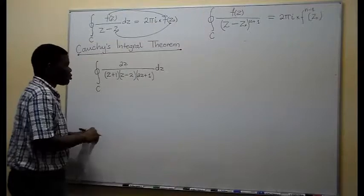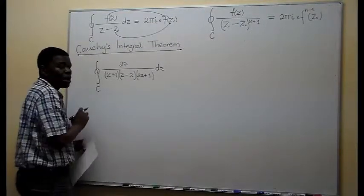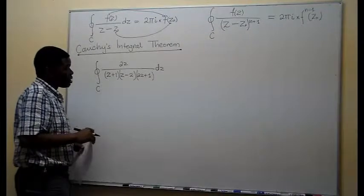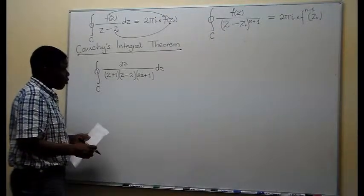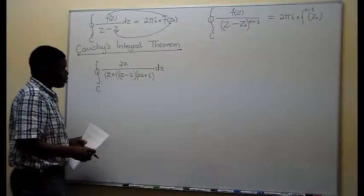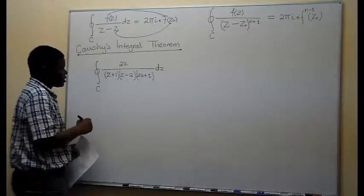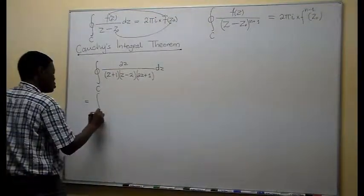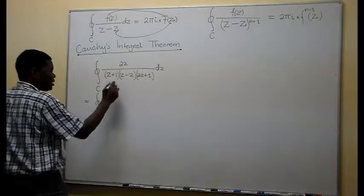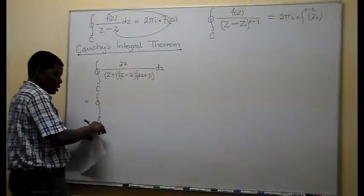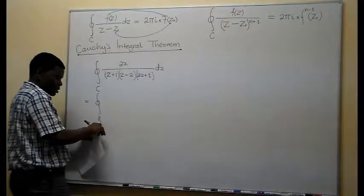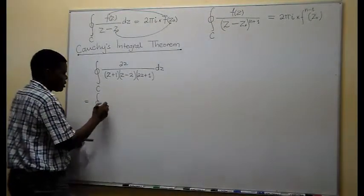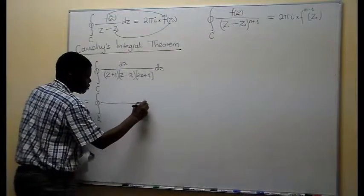Let's assume that all these poles are within the given closed curve. From the previous discussion, we know that the integral of f(z) equals the same function integrated around small circles, each containing only one pole.